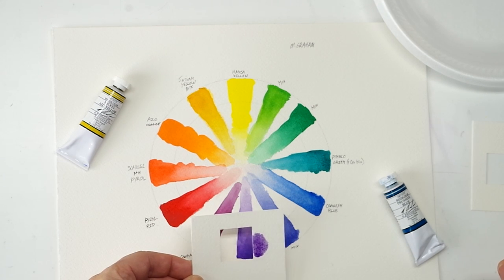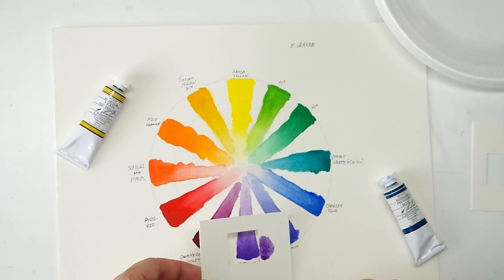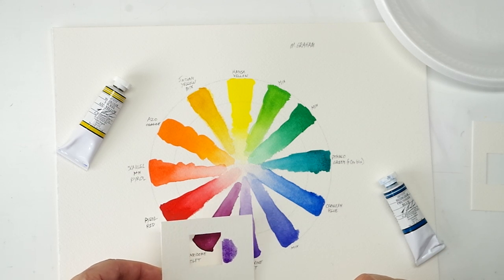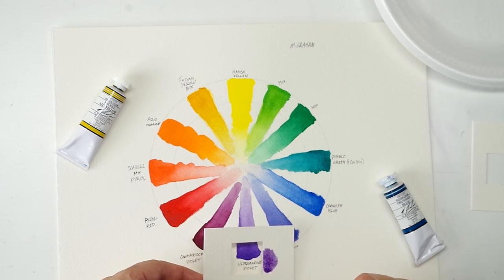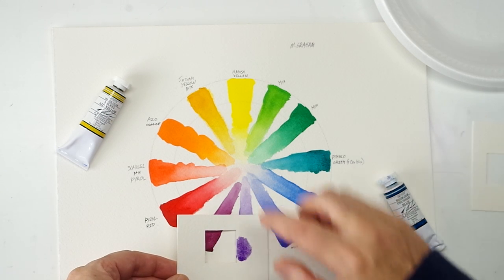All right, so there you have cobalt violet. This is a pretty easy one. It's very close to this ultramarine violet which I used in the wheel. Now I would say though, as I look, it's probably difficult to tell on camera, it's a little more red. It's not as red as quinacridone violet. It's a little redder than ultramarine violet. So I would slide it just over here.